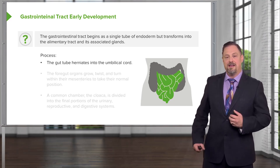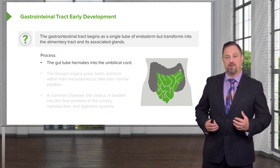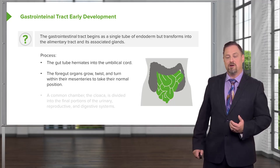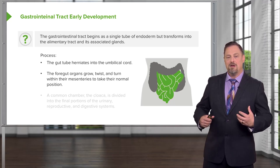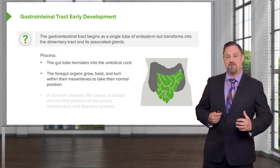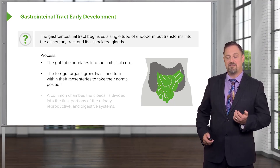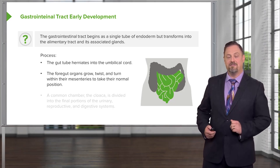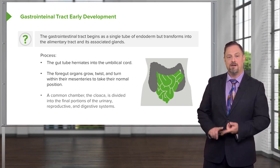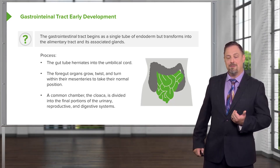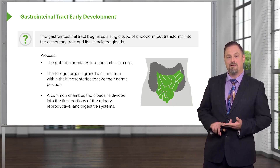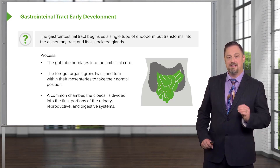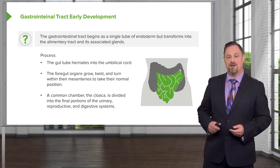As this happens, the gut actually runs out of space in the abdominal cavity and has to herniate temporarily into the umbilical cord. The foregut organs not only grow larger but migrate, shift around, and pull their mesenteries along with them, creating some bizarre structures such as the omenta and various mesenteries that connect different parts of the gut tube to the body wall. And last but not least, the common chamber for the reproductive, urinary, and digestive tracts — the cloaca — has to be subdivided to keep those systems separate from each other at the time of birth.